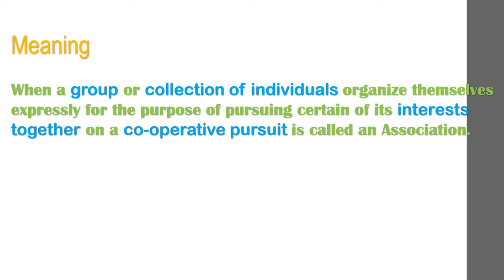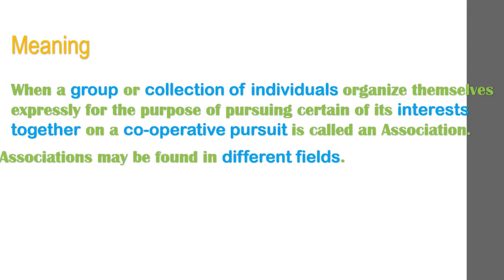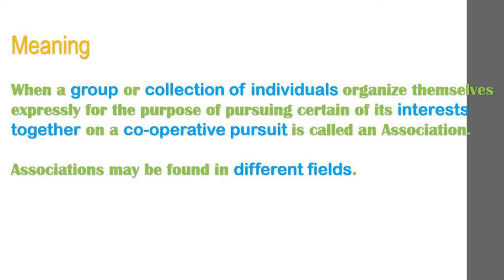An association is formed or created by people — it is a social group. Without people there can be no association. It is an organized group; an unorganized group like a crowd or mob cannot be an association. Association may be found in different fields. No single association can satisfy all the interests of individuals, so man organizes various associations. He may belong to more than one organization. For example, an association formed for flood relief is temporary, while one for state matters is permanent. Associations can also be classified by power: autonomous like the state, semi-autonomous like universities, and non-autonomous like clubs.